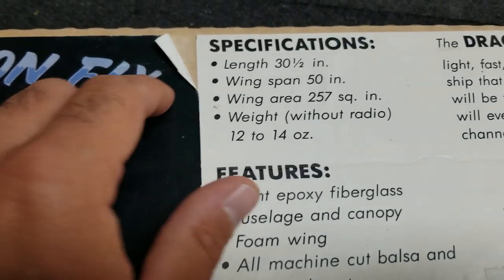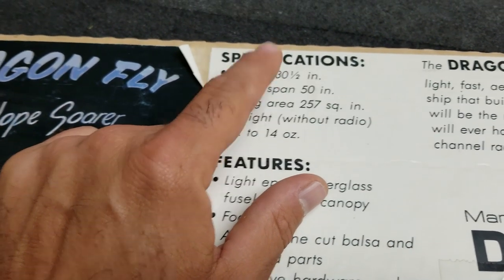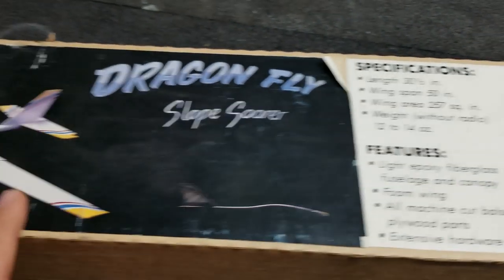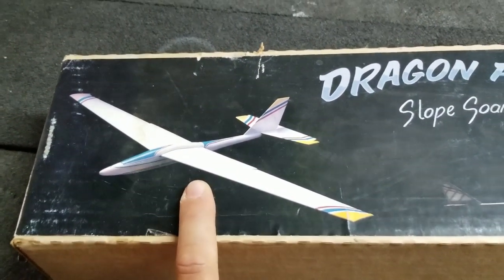Let's look at the specs. 30 inches long, 50 inch wingspan. Back in the day, the 50 inch wingspan two channel slope glider was a really common class.